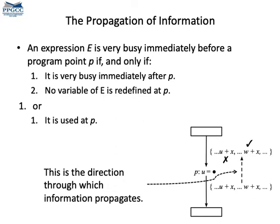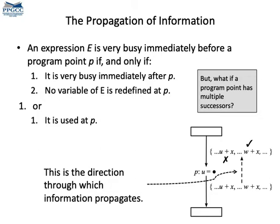But information also propagates, as in the previous data flow analysis. So, if an expression is very busy after an instruction and it's not updated by that instruction, then it's also very busy before the instruction. So, information propagates backwardly in this analysis. Now, what do we do about instructions with multiple successors? Or, in other words, how do we join data flow information?